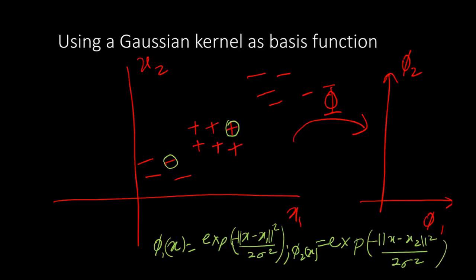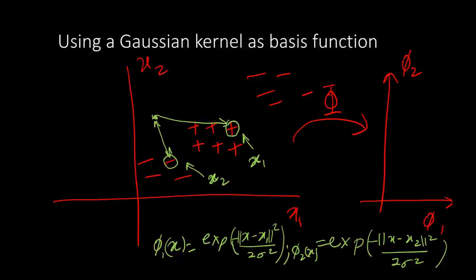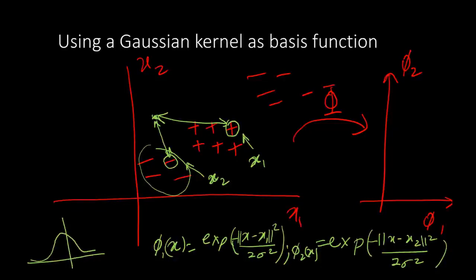For every other point x, we take the distance from x1 and from x2 and fit a Gaussian kernel on that. When the distance is small, the Gaussian kernel gives a high value. So the negative points that are close to x2 will have a high phi2 value, and those far from x1 will have a low phi1 value.